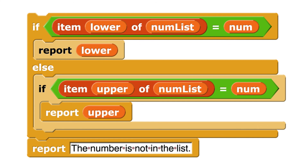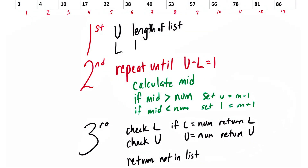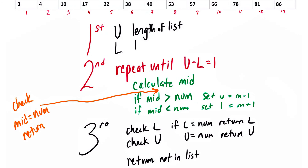If at any point we have a match, we return the position we're looking at. And there it is — but I forgot one last thing. I really should check to see if the midpoint equals the number we're looking for, and we should do that before we recalculate the upper or lower values. Because if we found it, we don't have to recalculate. So after we calculate the middle, we check if the midpoint equals the number we're looking for, and if it does, we return the mid — which tells us what position the value is at.